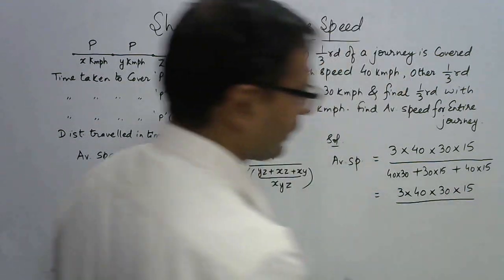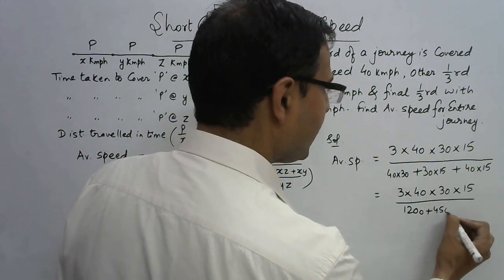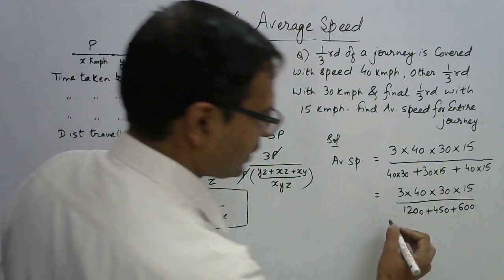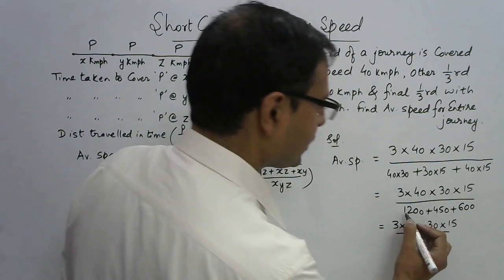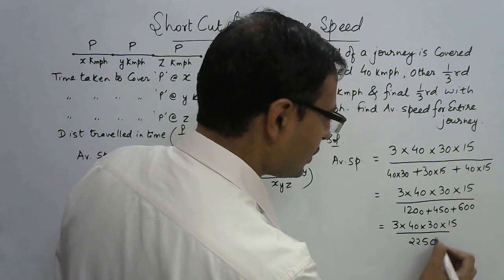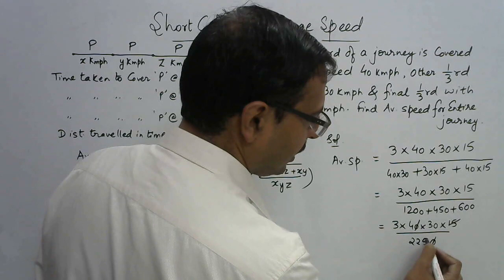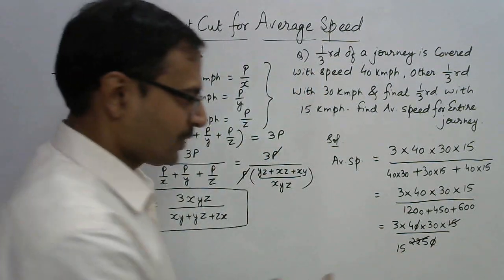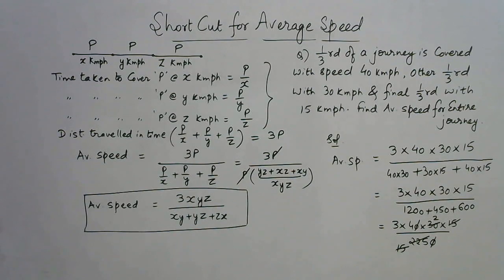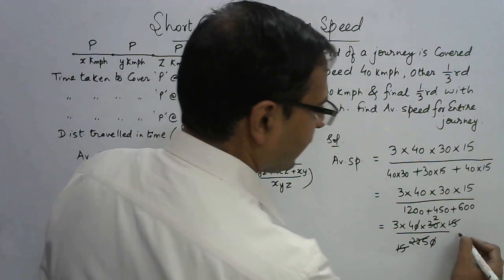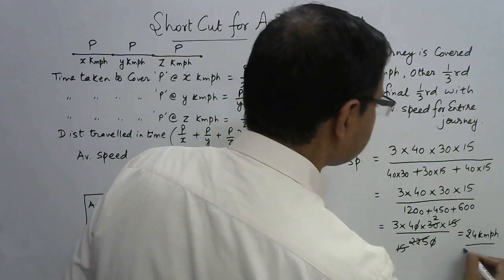So the numerator is 3 × 40 × 30 × 15 = 54000, and the denominator is 1200 + 450 + 600 = 2250. Cancelling: 54000 / 2250 — a zero cancels, then 15 cancels exactly twice — giving 3 × 4 × 2 = 24. So 24 kmph is the average speed for the entire journey.